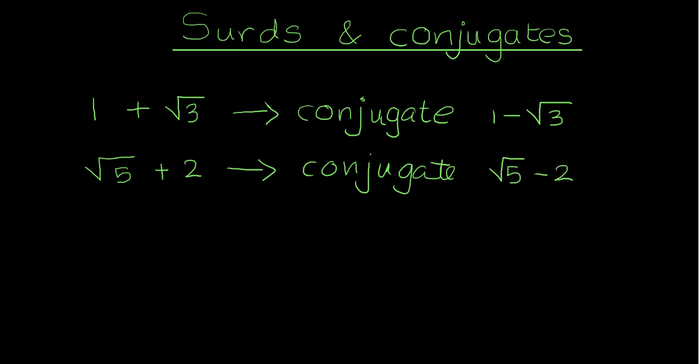Similarly, if I have another number root 8 minus 3, its conjugate would be root 8 plus 3. So when I am finding the conjugate, basically I am changing the sign in the middle to the opposite one. If it was minus I would change it to a plus, and if it was a plus I would change it to a minus. The first number stays the same, the sign in between changes, and that's it really. The second number stays the same.